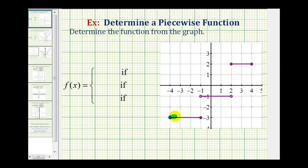We'll have a function rule for this piece, which will be our first function rule. Then we'll have a function rule for the second piece, which will be our second function rule. And then for the third piece, we'll have a third function rule.